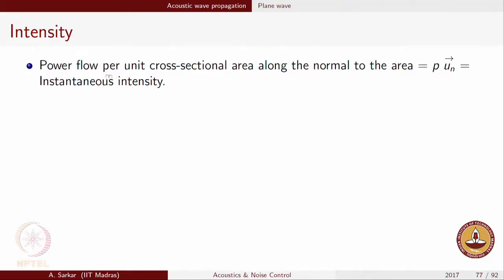Last class we talked about acoustic intensity — the concept was introduced. Let us have a quick recapitulation. Firstly, acoustic intensity, or more precisely the instantaneous acoustic intensity, is defined as the power flow per unit cross-sectional area along the normal to the area.